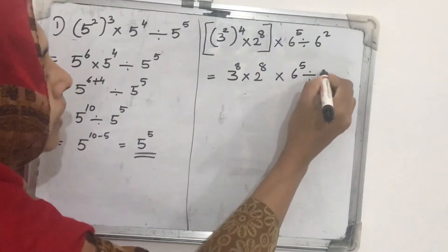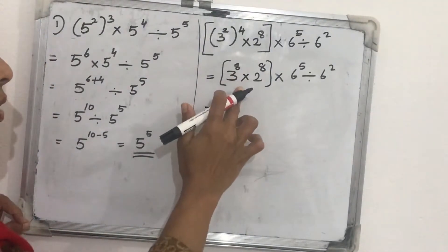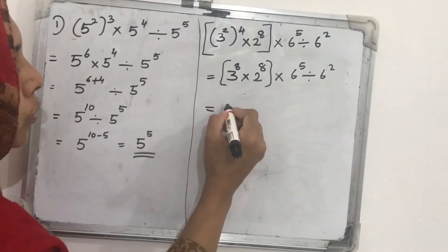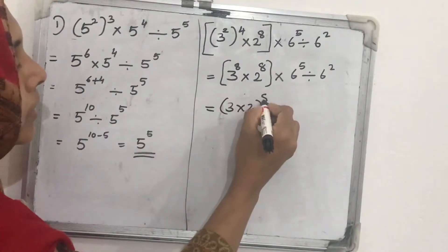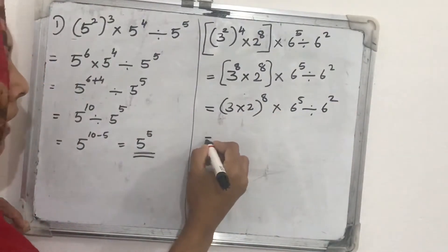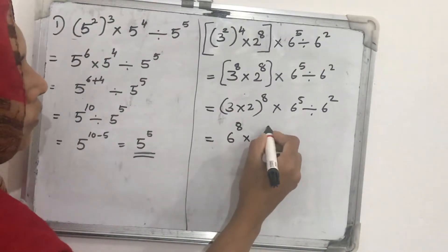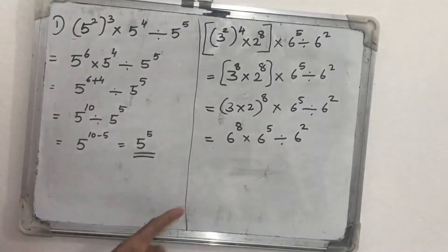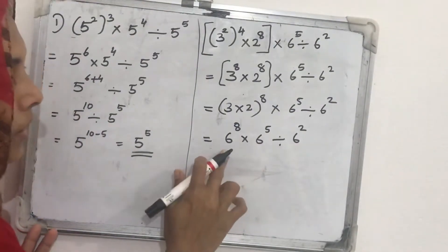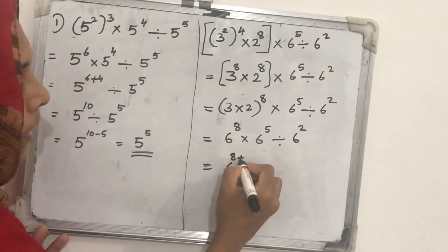We have six raised to five divided by six squared. Using the law for same base with different powers, three raised to eight and two raised to eight give us three times two, whole raised to eight, which is six raised to eight. Rearranging, we get six raised to eight, times six raised to five, divided by six squared. Now all numbers have the same base six. Using x raised to a times x raised to b equals x raised to a plus b, we get six raised to eight plus five, divided by six squared.